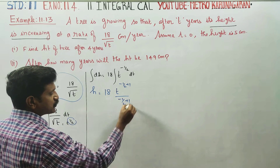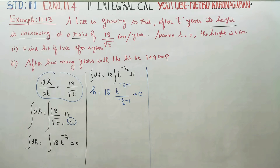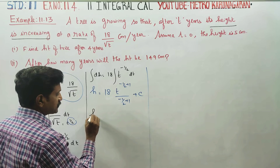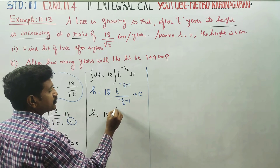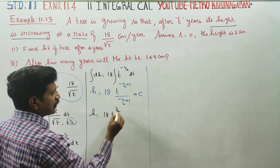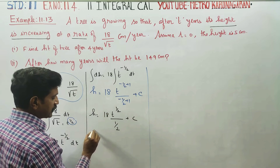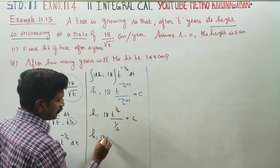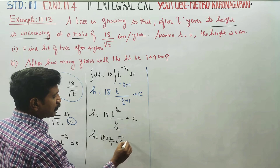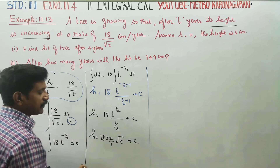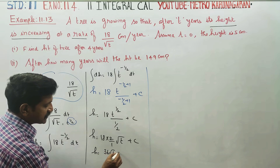Plus one integration constant c. Next stage: h is equal to 18 times t to the power of one half, divided by one half — taking the reciprocal — h is equal to 18 times root t times 2, plus c. Therefore h is equal to 36 root t plus c.